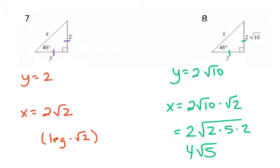Here's your answers for 7 and 8. Number 7 is pretty straightforward. Y is going to be the same as the other leg, so they're both 2. Then you take that and multiply by square root 2 to get your hypotenuse. For number 8, Y is going to be the same as the other leg, so 2 square root 10.